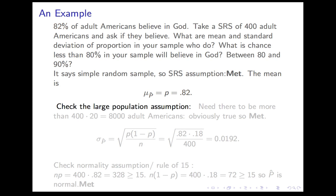The second assumption is the large population assumption. We need there to be more than 400 times 20 = 8,000 adult Americans. The problem doesn't say how many there are, but everyone knows there are far more than 8,000 — roughly 150 to 200 million — so this is met. That process is important: we rarely know the exact population size, but usually it's obvious the population is bigger than 20 times the sample size. If you're unsure, say so; if it's clearly not met, say that.